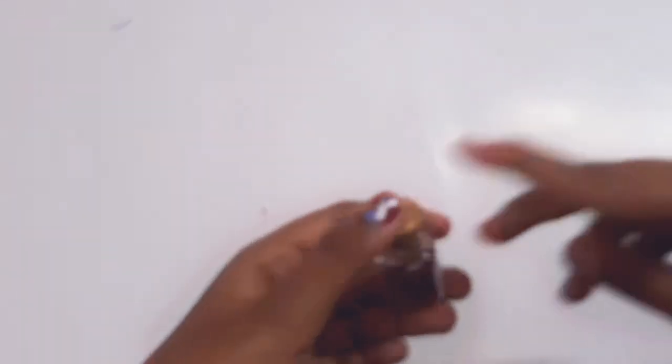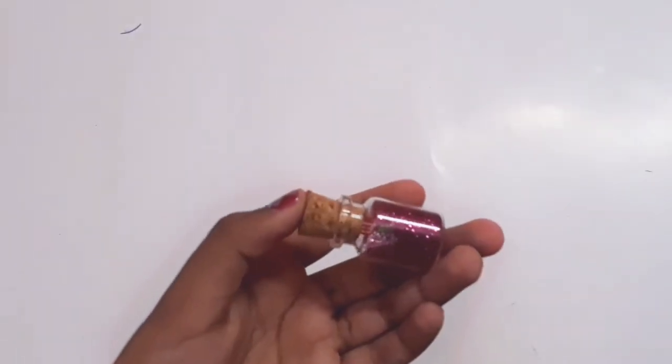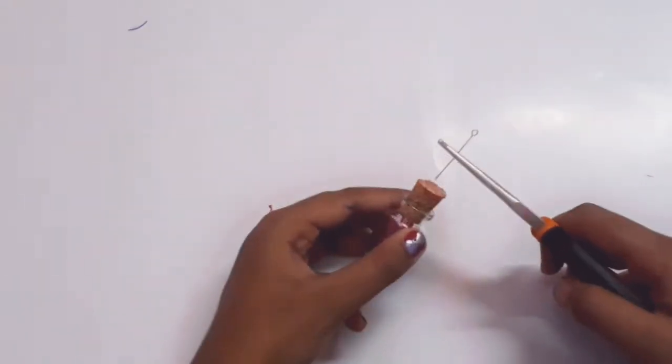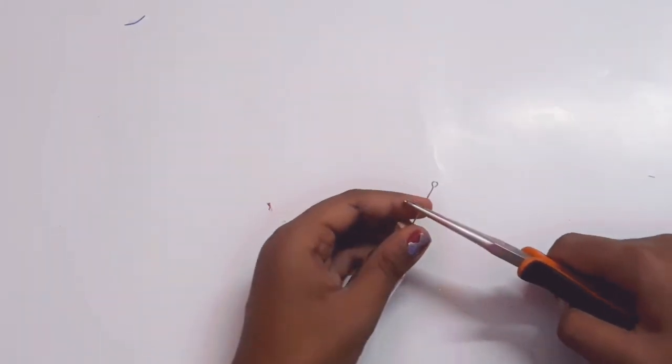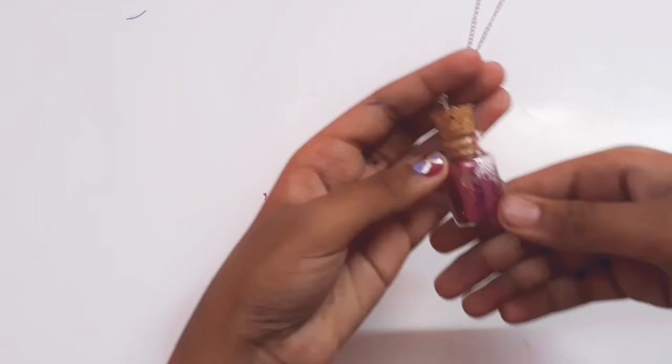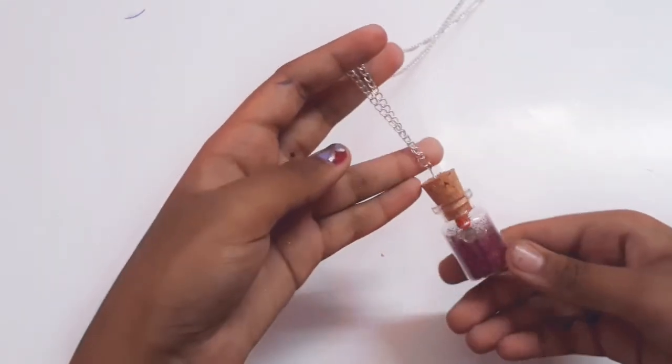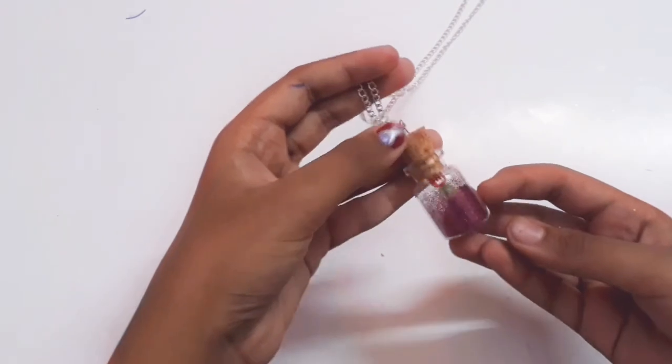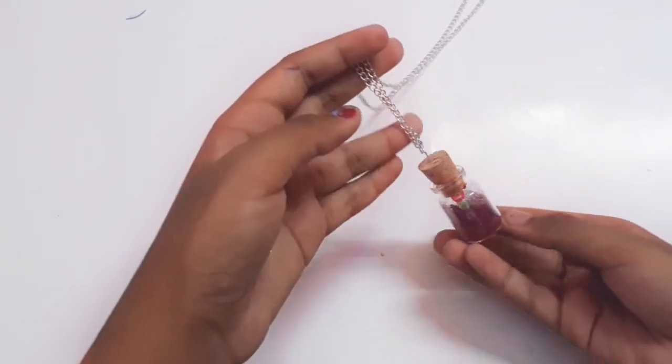Fasten it with a jump ring. Make sure that you glue the cork to the bottle. This is how it looks.